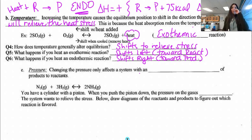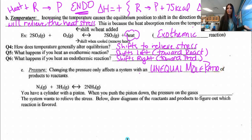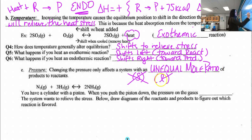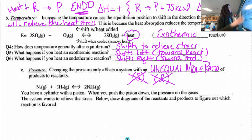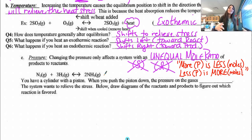Now we've got pressure. Changing pressure only affects the system if it has an unequal mole ratio of products to reactants — and we do not include solids or liquids. When counting moles, only include gases and aqueous. I like to say: more is less and less is more. More pressure means less moles — less pressure means more moles.